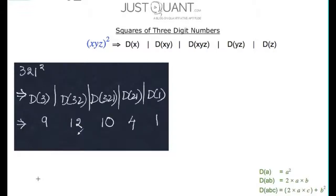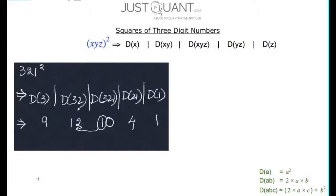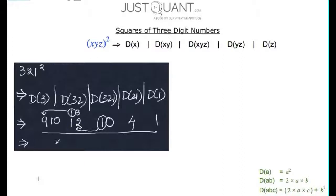Now, in some of these parts we notice that some duplexes have more than one digit. Please note that only the leftmost part can have more than one digit. For the rest of the parts we need to carry over the number preceding the unit's digit to the immediate left part and add it there. Hence for 10, which has 1 as the non-units digit, we carry over 1 to the immediate left, which turns 12 to 13. Now again, 13 is a two-digit duplex and hence we carry 1 to the left turning 9 to 10. Hence combining all parts we find that the square of 321 is 103,041.